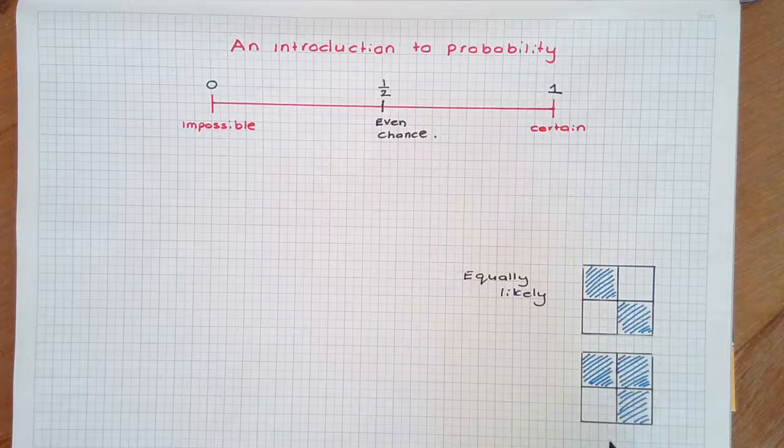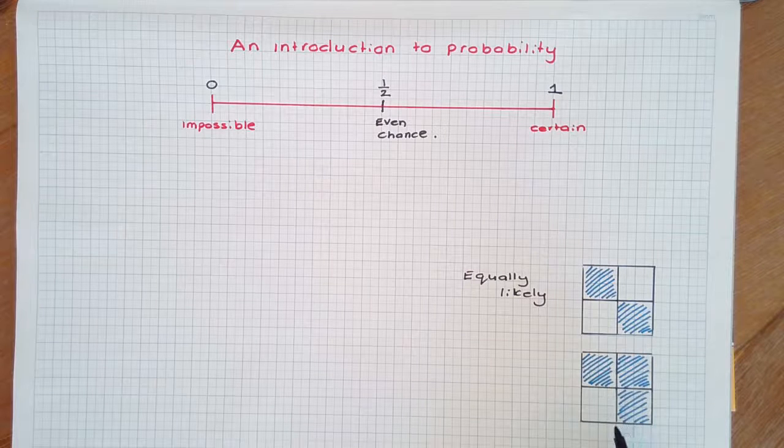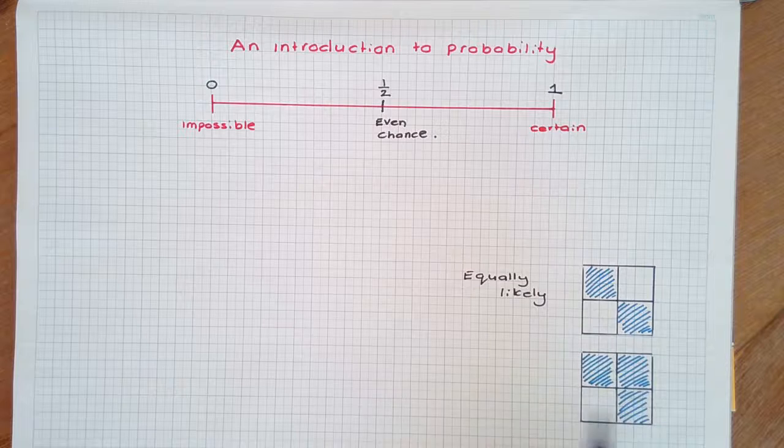But in Board 2, the outcomes are not equally likely, as shaded squares now have a greater chance of being selected.